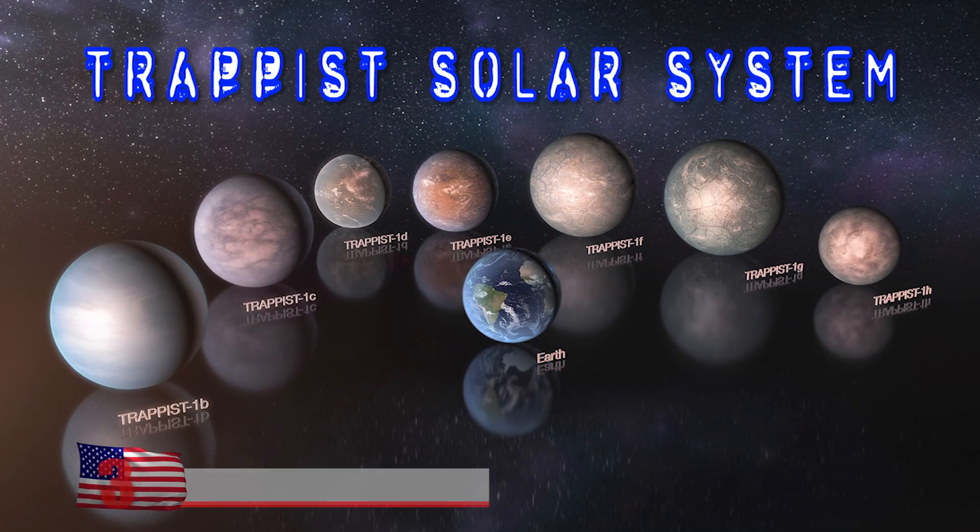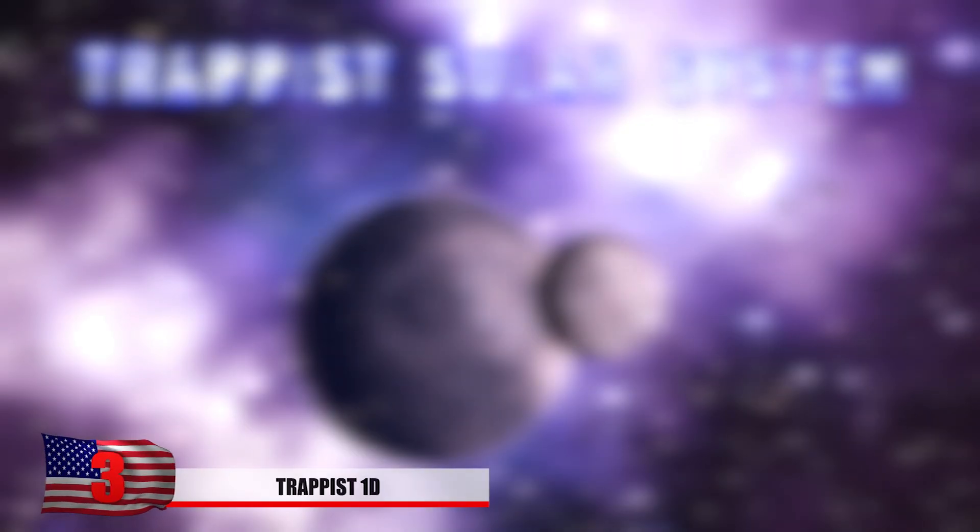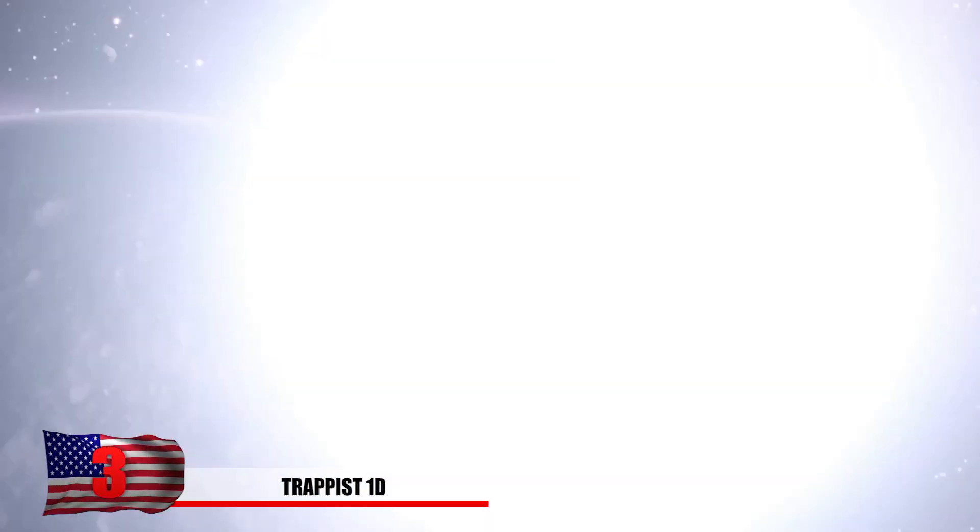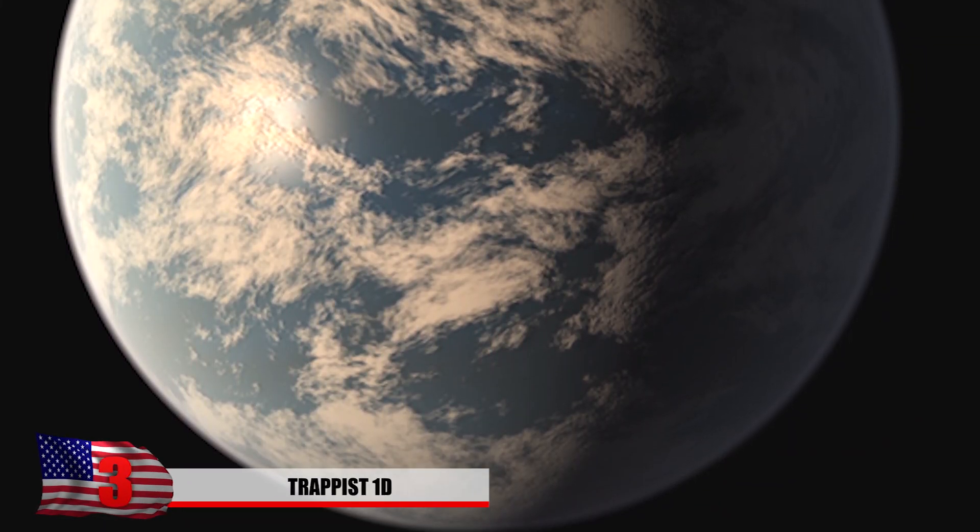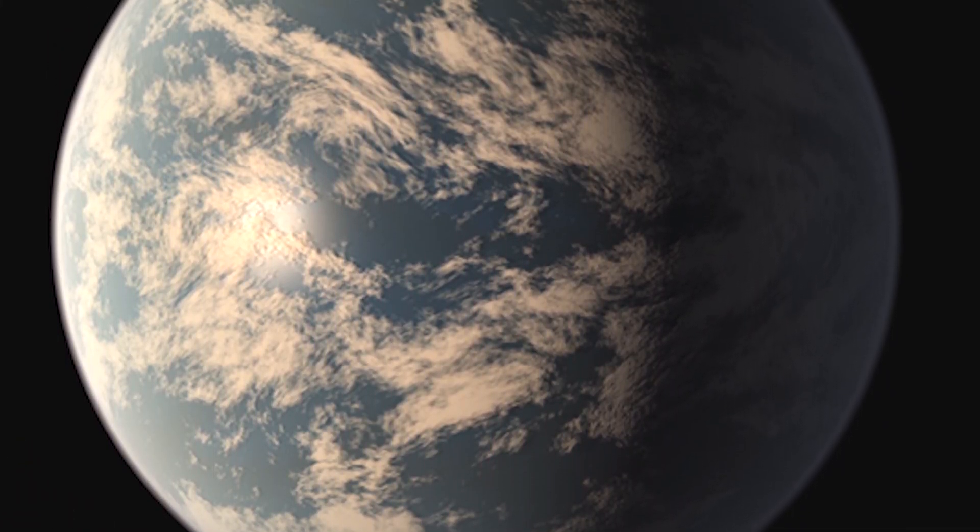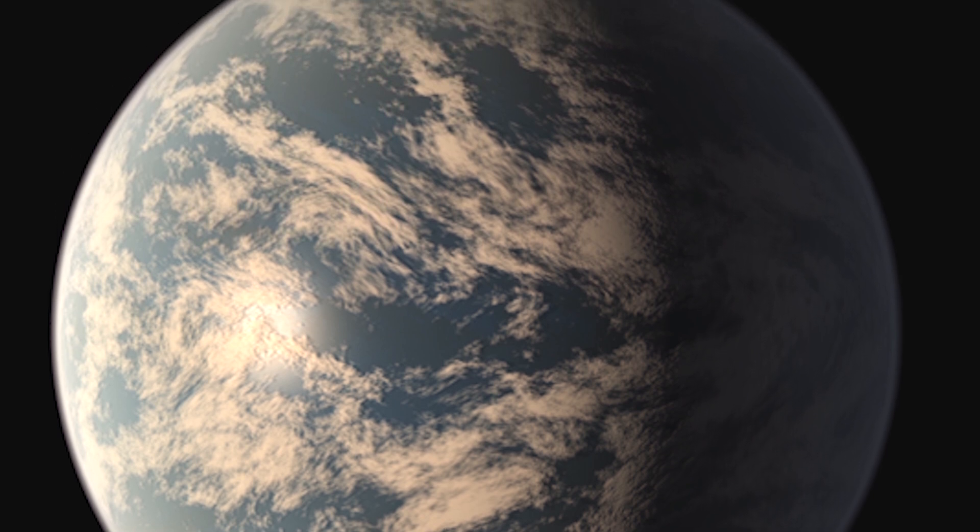Number 3, TRAPPIST-1D. Located within the TRAPPIST solar system that we previously mentioned, this one is one of the closer planets to the star which it orbits. This exoplanet was found using the transit method where the dimming effect occurs that a planet causes and is spotted across the front of the star.